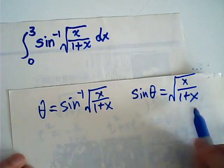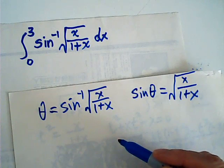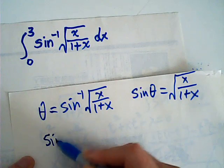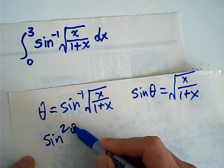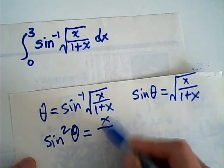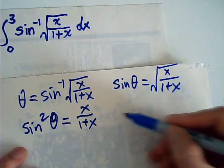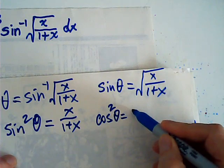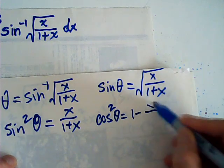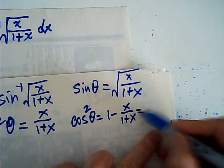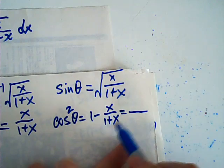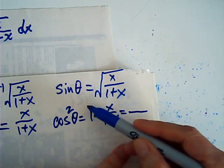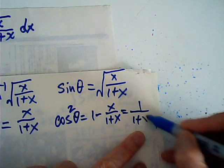It seems that we have to find cosine. Sine squared theta is equal to x over 1 plus x. Then cosine squared is 1 minus x over 1 plus x, which gives us 1 over 1 plus x. That is good — 1 plus x over 1 plus x minus x is 1 over 1 plus x.